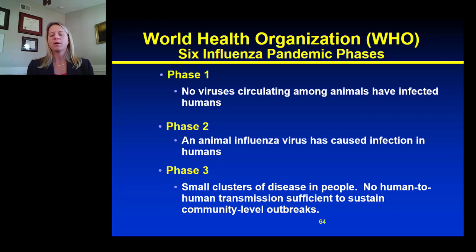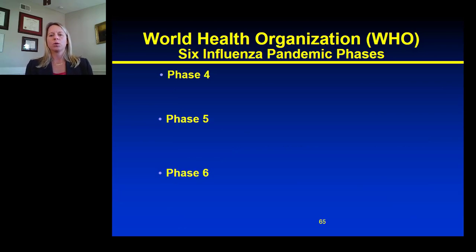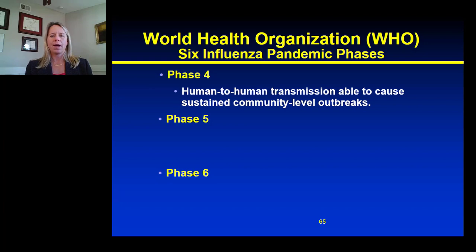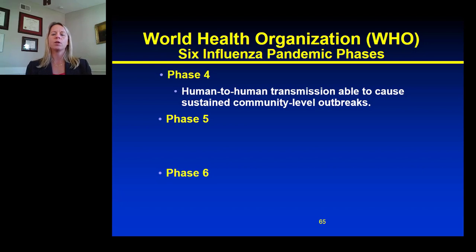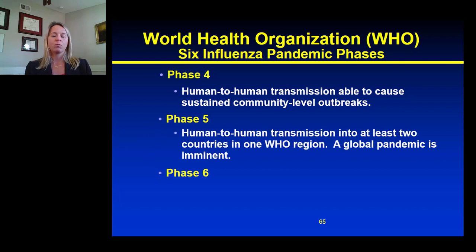In phase three, the human infections were occurring by animal exposure. The fourth phase is when you have human-to-human transmission, and that transmission is able to cause sustained community-level outbreaks. It is at the point of phase four that, from a public health perspective, it is a major concern and requires immediate action.